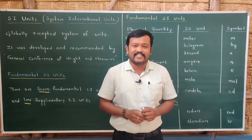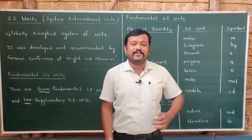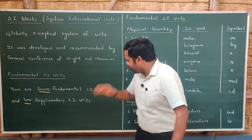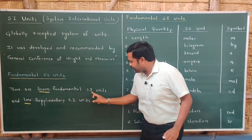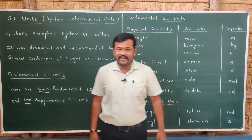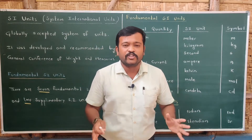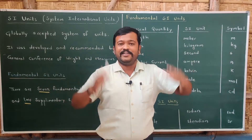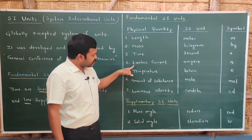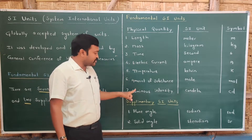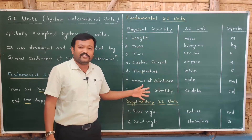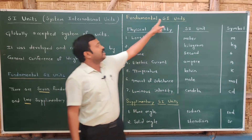Now let us divide SI units into two types: fundamental and derived, based upon the physical quantity. There are seven fundamental SI units and two supplementary SI units. There are seven physical quantities on which all other physical quantities depend: length, mass, time, electric current, temperature, amount of substance, and luminous intensity.